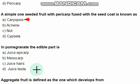Next question: in pomegranate the edible part is — the right option is option D: juicy testa.